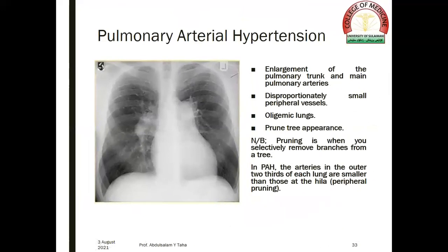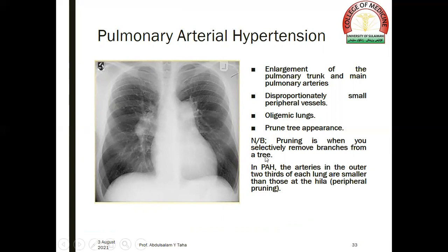In pulmonary arterial hypertension, there is an enlargement of the pulmonary trunk and main pulmonary arteries, with disproportionately small peripheral vessels. The lung fields appear oligemic, and there is what is called the pruned tree appearance. Pruning is when you selectively remove branches from a tree. In pulmonary arterial hypertension, the arteries in the outer two-thirds of each lung are smaller than those at the hilum, giving the appearance of peripheral pruning.